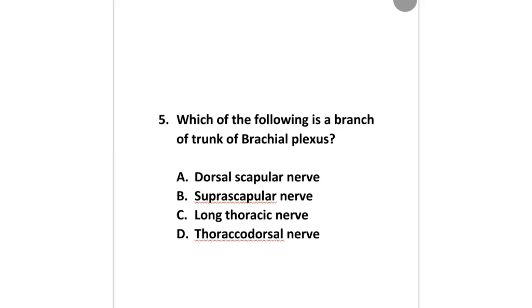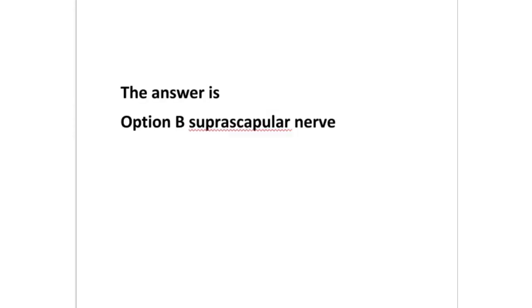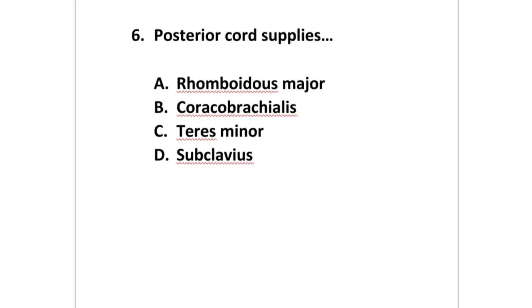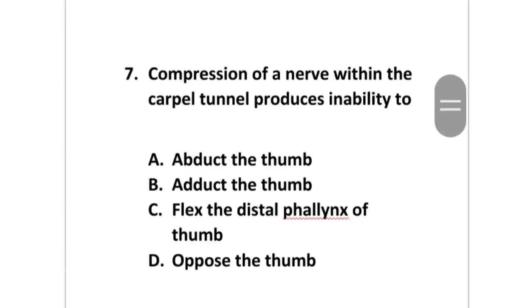Which of the following is a branch of the trunk of the brachial plexus? Dorsal scapular nerve, suprascapular nerve, long thoracic nerve, or thoracodorsal nerve? The answer is option B: suprascapular nerve. The posterior cord supplies which muscle — rhomboidus major, coracobrachialis, teres minor, or subclavius? The answer is option C: teres minor.